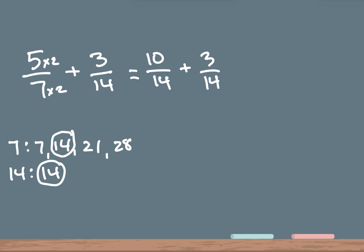Now you can see that the two bottom numbers are the same. So we add the top numbers: 10 plus 3 is 13, and the bottom number stays the same — so it's 14. The answer to this first problem is 13 over 14. You can also simplify, but in this case this is already in its simplest form.